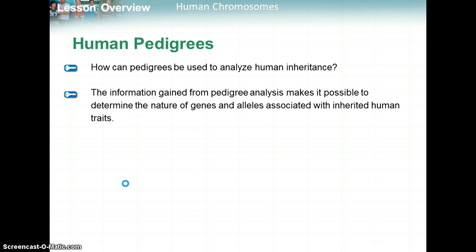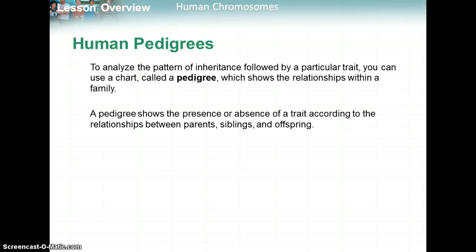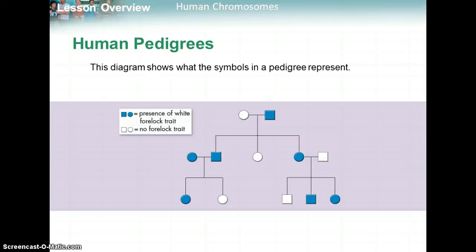Now the last section of this chapter: pedigrees. We can use pedigrees to analyze human inheritance. The information gained from pedigree analysis makes it possible to determine the nature of genes — how they're inherited, like dominant, recessive, codominant, or sex-linked — and which alleles are associated with inherited human traits. A pedigree looks almost like a family tree and shows the presence or absence of a trait according to the relationships between parents, siblings, and offspring. Here is a pedigree with three different generations — circles represent females and squares represent males.